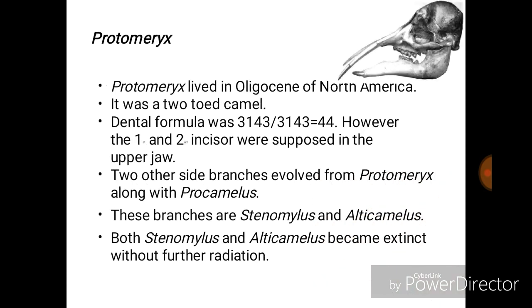Protomeryx lived in the Oligocene of North America. It was a two-toed camel and the dental formula was 3 incisors, 1 canine, 4 premolars, and 3 molars. In its fossil, the first and second incisors were suppressed.